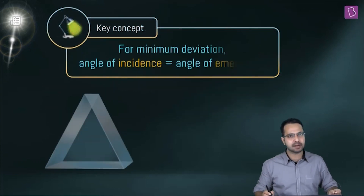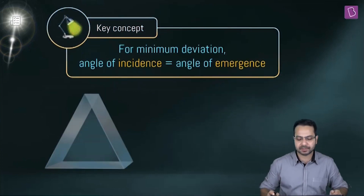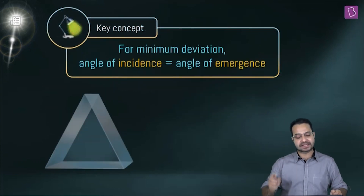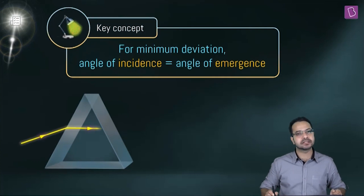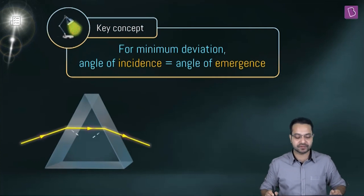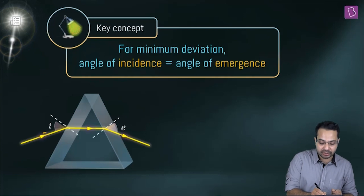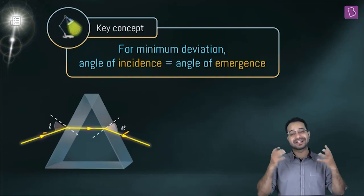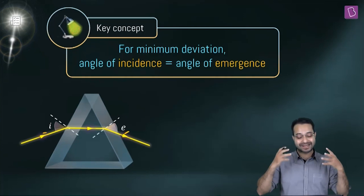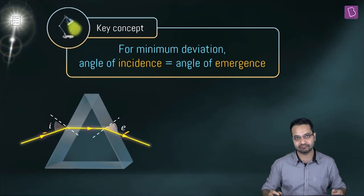We are talking about prism and minimum deviation. The key concept involved here is that for minimum deviation, the angle of incidence is equal to the angle of emergence. So if this is the angle of incidence and this is the angle of emergence, they have to be equal in case of minimum deviation.